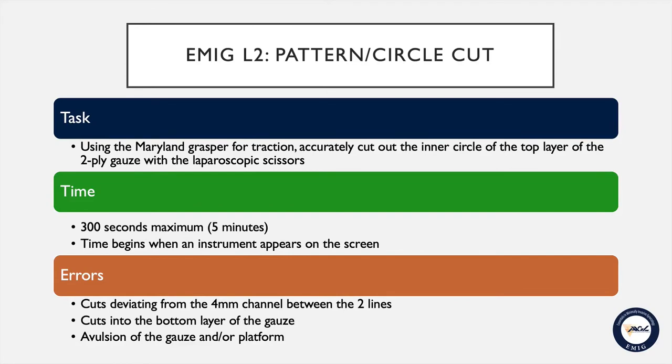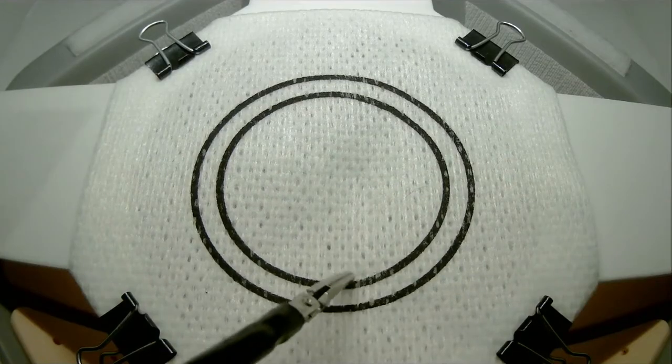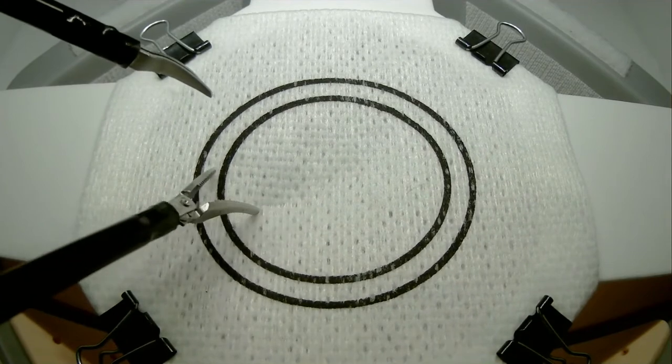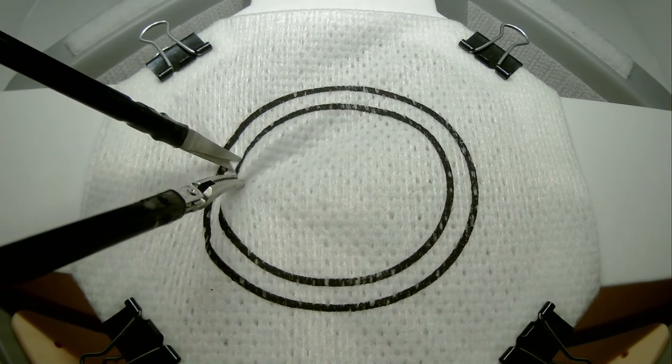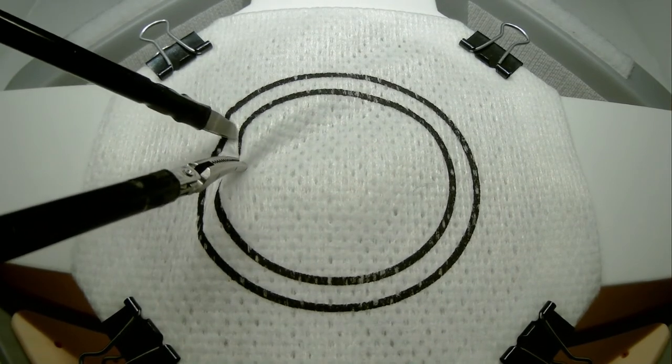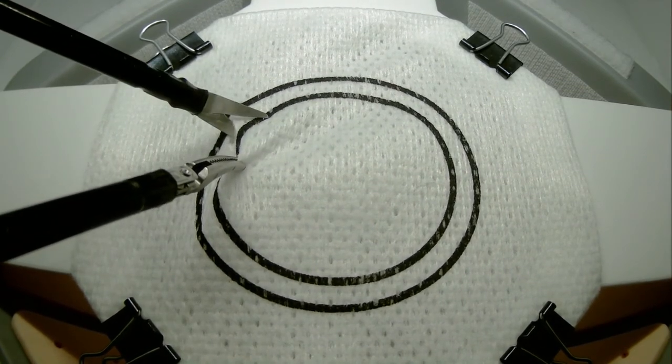Time begins when an instrument is visible on screen. You will use the Maryland grasper to tent the gauze so that you can perform the cut in between the inner and outer circles of the gauze.